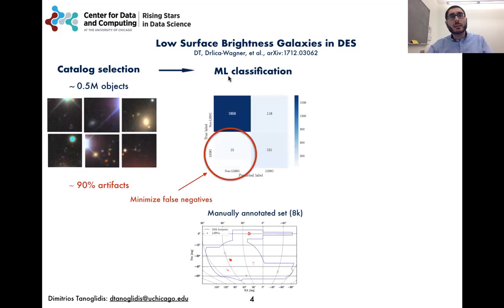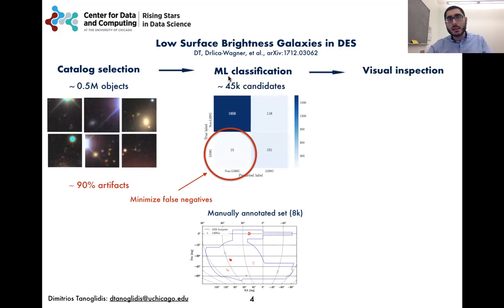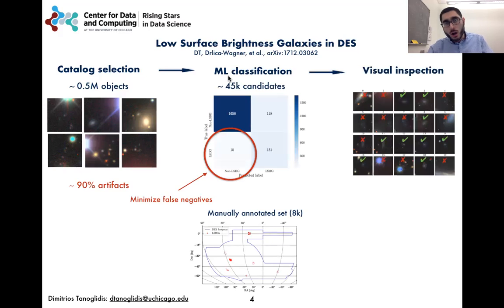After this step, we ended up with a sample of 45,000 candidates, with a large number of false positives that we subsequently rejected by inspecting all of them. The final sample was 24,000 low surface brightness galaxies.